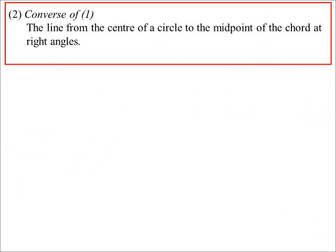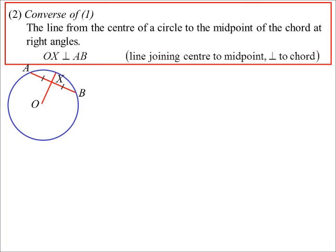The converse: the line from the center to the midpoint of a chord is at right angles. This time, I know that OX bisects AB. In the first theorem, we knew they were perpendicular and concluded they bisect. This one says: I know they bisect, therefore they're perpendicular. The line joining the center to the midpoint will be perpendicular to the chord, and we can prove this using congruent triangles.